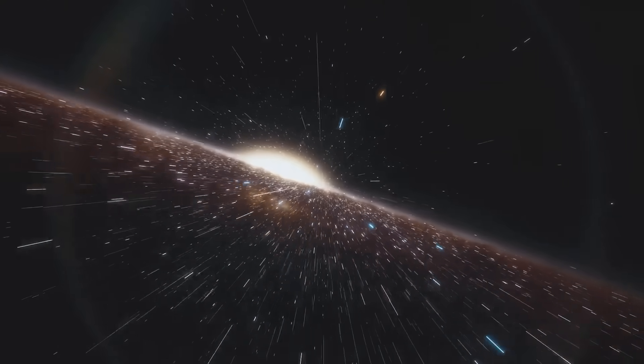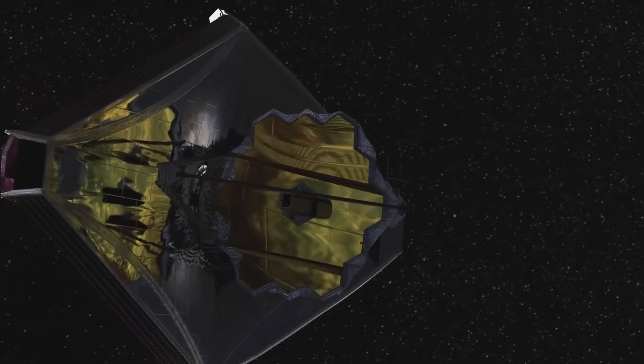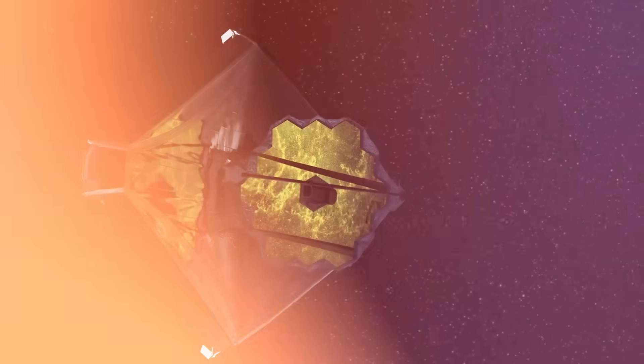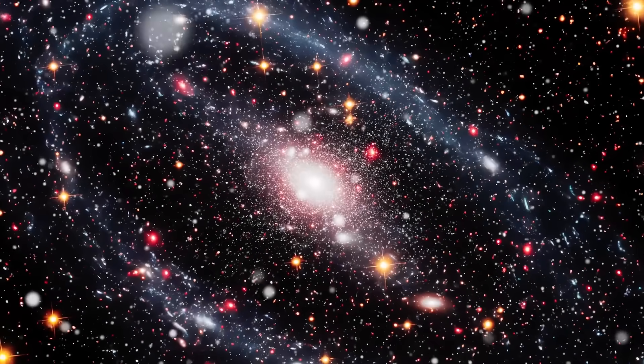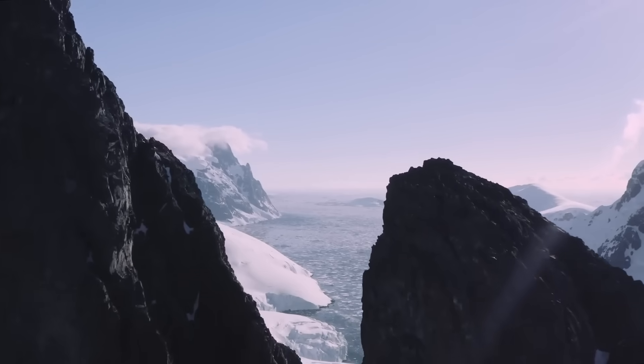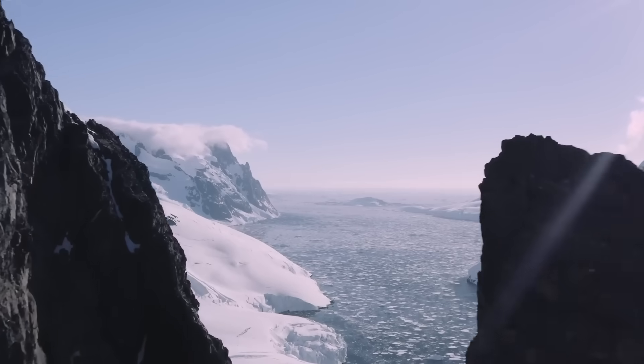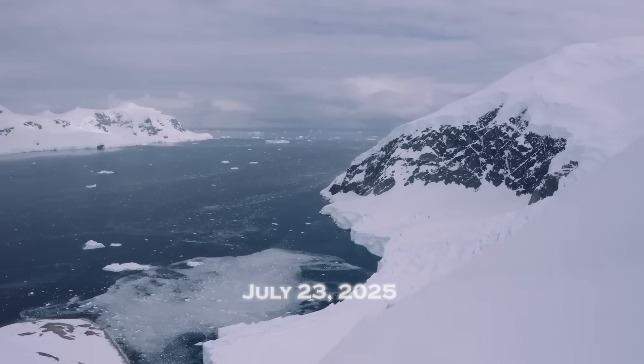Buried deep within the AI's output logs was a set of coordinates. A simple string of numbers: longitude, latitude, and time. At first glance, it looked like just another anomaly. But when an astronomer ran the numbers through a classical simulation, chills ran through the room. The coordinates pointed not to a location in space, but to a date and place on Earth. Specifically, a remote region in the Arctic Circle. And the date? July 23rd, 2025. Just weeks away.